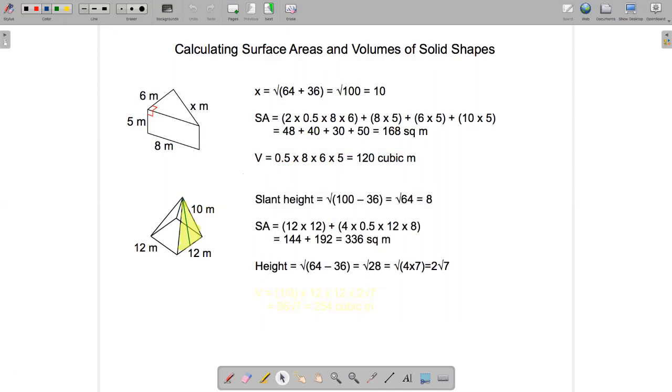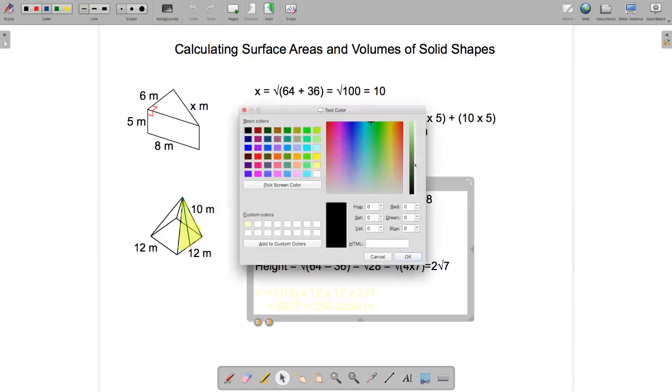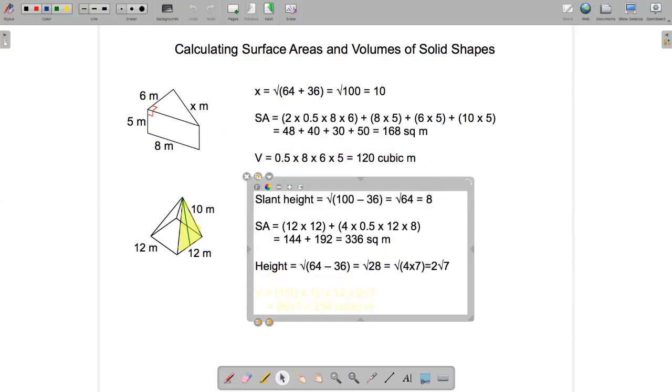Okay, and then finally the volume will be one third times the area of the base, which is 12 times 12, times that height which was 2 root 7. If I calculate that out I'll get 96 root 7, and then finally I'll express this as a decimal, comes to 254 cubic meters.